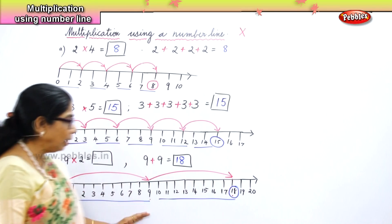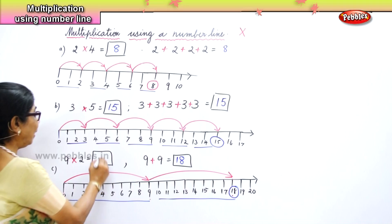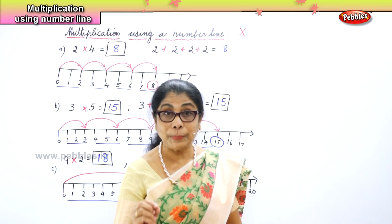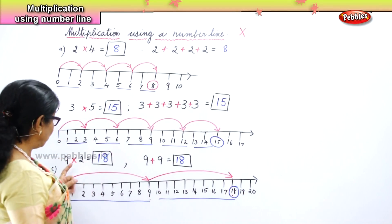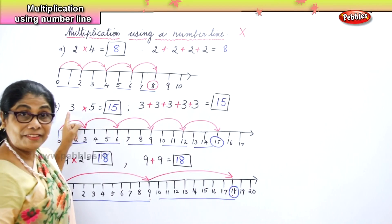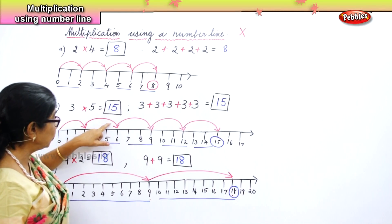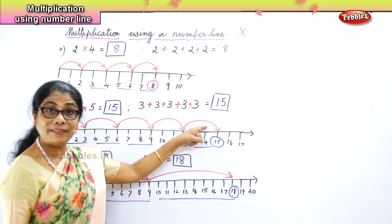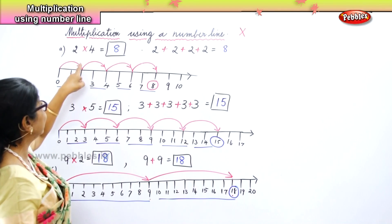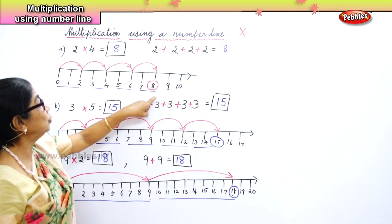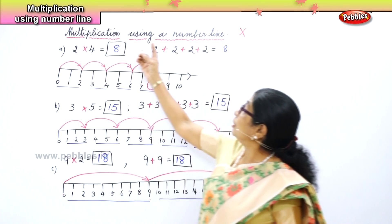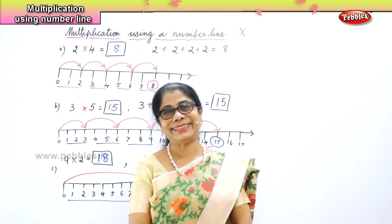Nine twos are eighteen. Now we learn to do multiplication on a number line. Nine two times is eighteen — two jumps. Three five times is fifteen — one, two, three, four, five jumps, three fives are fifteen. Two four times — one, two, three, four jumps, four twos are eight. So we learn to do multiplication using a number line.